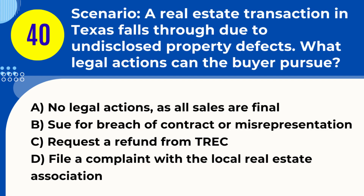Question 40. Scenario: A real estate transaction in Texas falls through due to undisclosed property defects. What legal actions can the buyer pursue? A. No legal actions as all sales are final. B. Sue for breach of contract or misrepresentation. C. Request a refund from TREC. D. File a complaint with the local real estate association. Answer: B. Sue for breach of contract or misrepresentation. Explanation: If a real estate transaction in Texas fails due to undisclosed defects, the buyer may have grounds to sue the seller for breach of contract or misrepresentation.